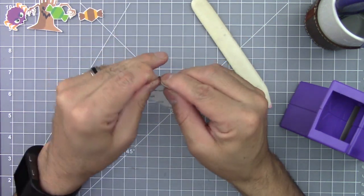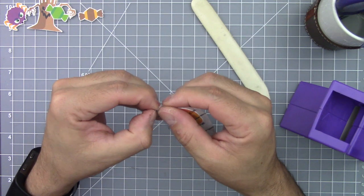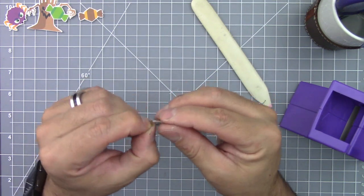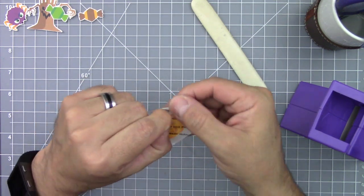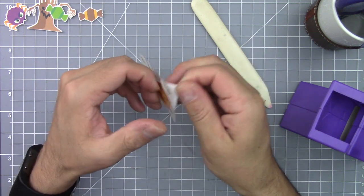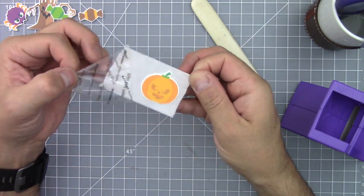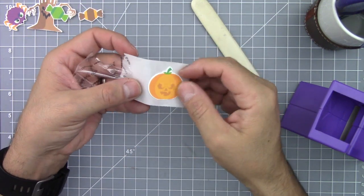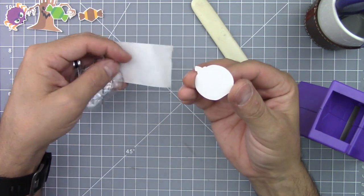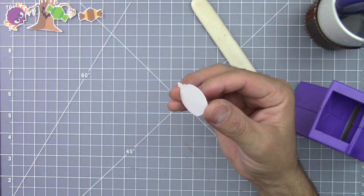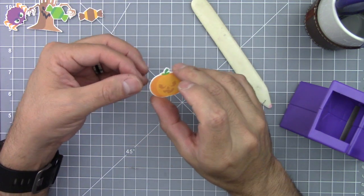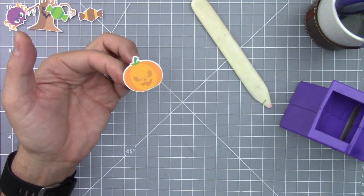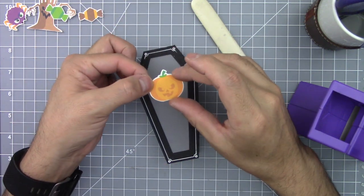Peel the backing and there is your sticker. The adhesive on this machine is very good and your sticker will adhere to most surfaces.